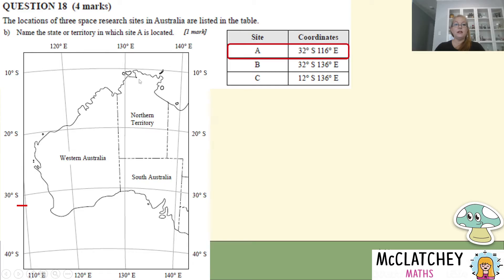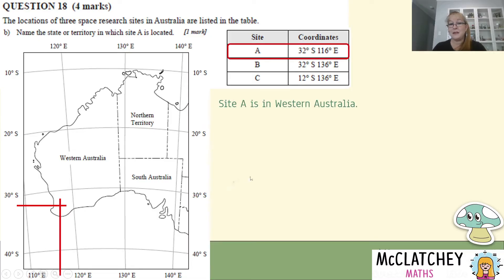For 116 degrees east, we come down to 110 at the bottom end — 116 will be just more than halfway between 110 and 120, so halfway is about here and there's 116 degrees. If I extend those two arms up, it hits the bottom tip of Western Australia. So Site A is in Western Australia — that's our next mark.